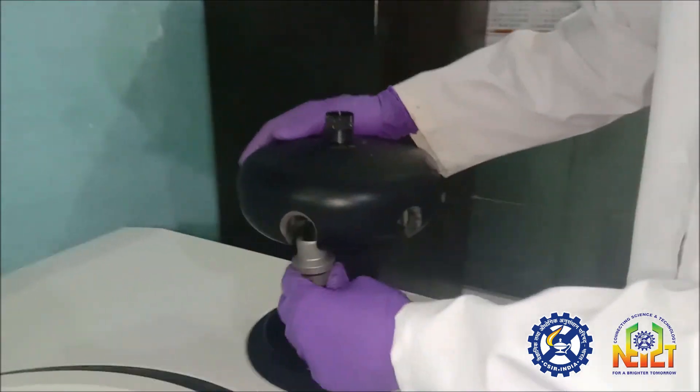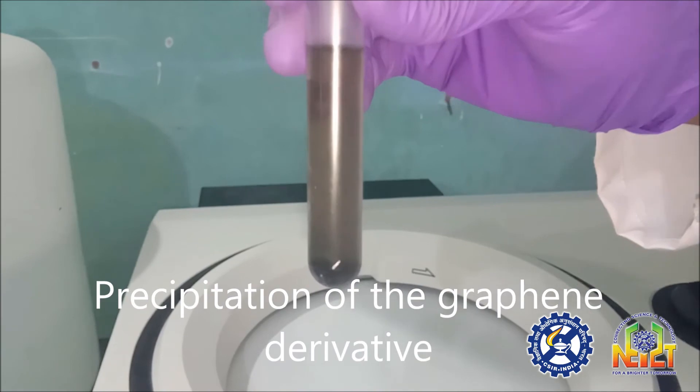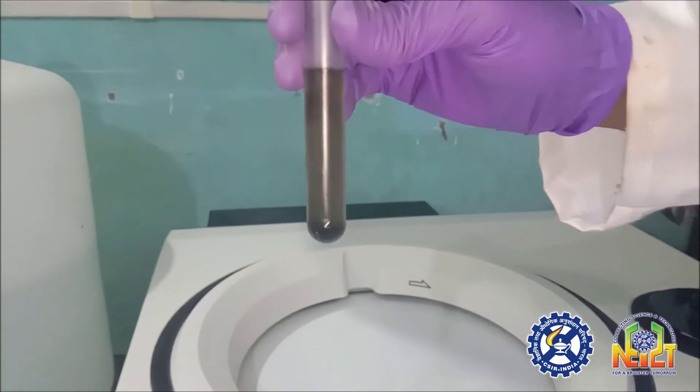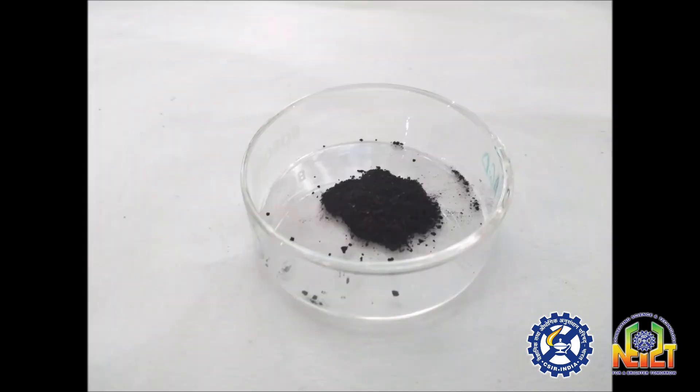After a few times of repetitions, the precipitation of the graphene derivative takes place. The sample was then separated followed by drying, after which we get the graphene derivative as the final product.